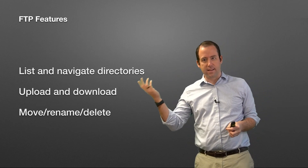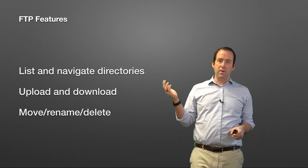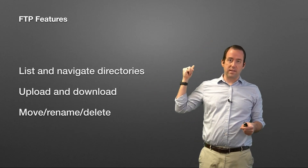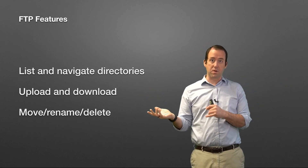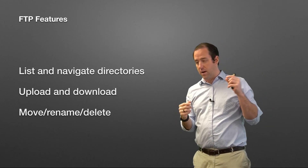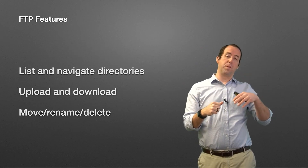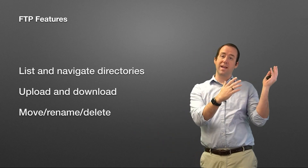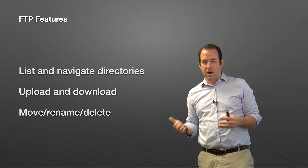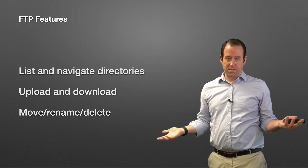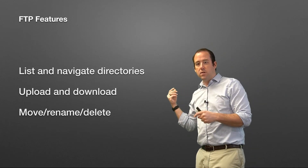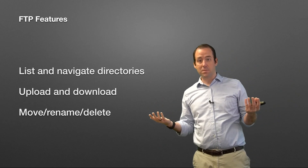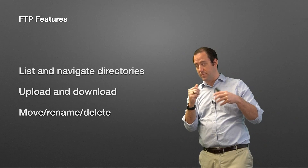FTP can do a lot of things. It can list and navigate directories — and these things may seem obvious, but we'll talk about some protocols that can't do them. Listing and navigating directories is handy; it's what you do on your computer all the time to find files. It can upload and download — and it's designed to do both — and not all file-oriented protocols are designed for both. You can also move, rename, and delete files, which is super helpful when working on a server.